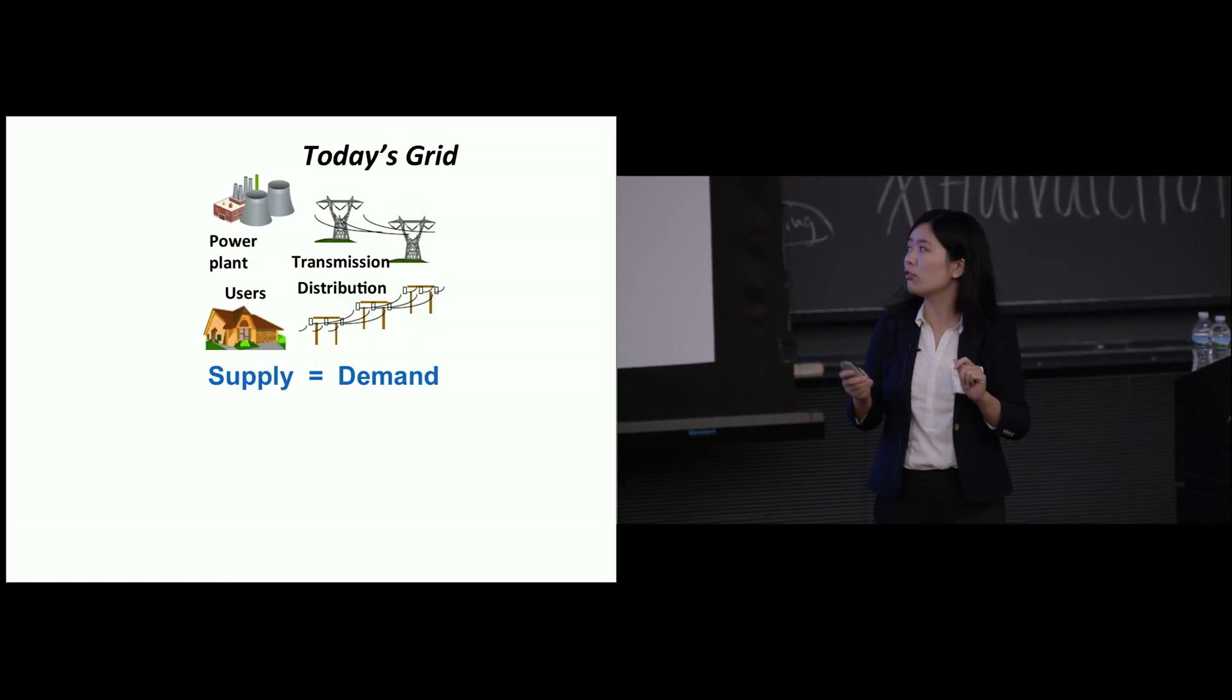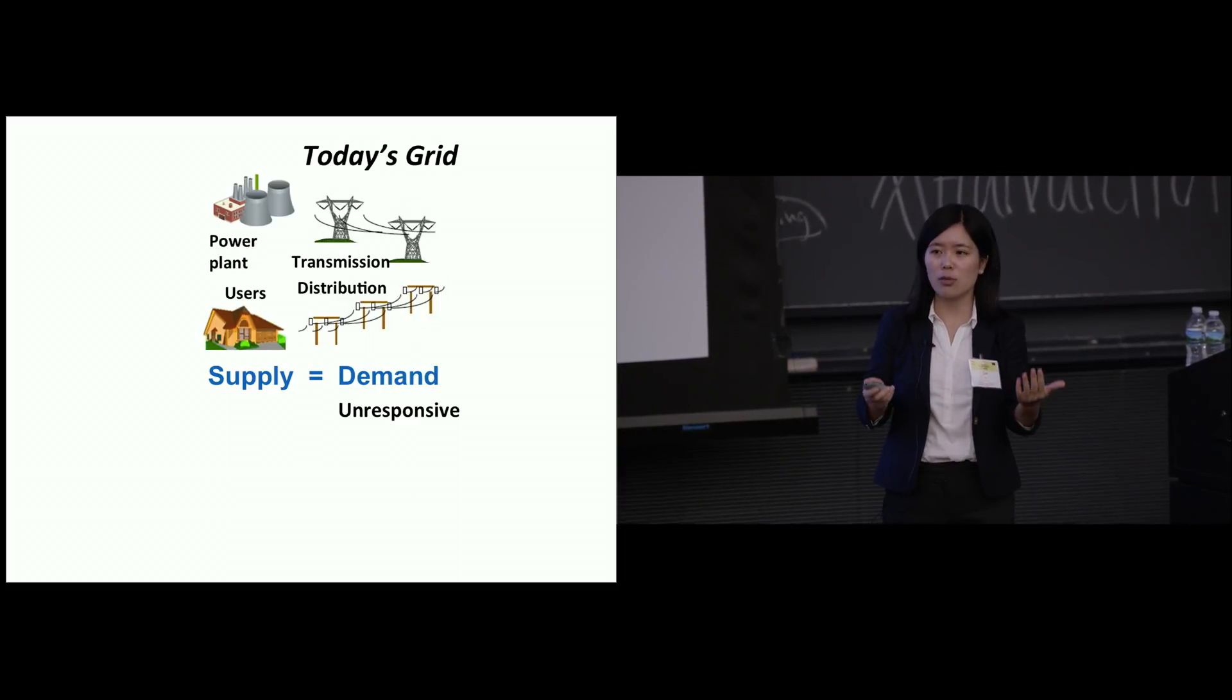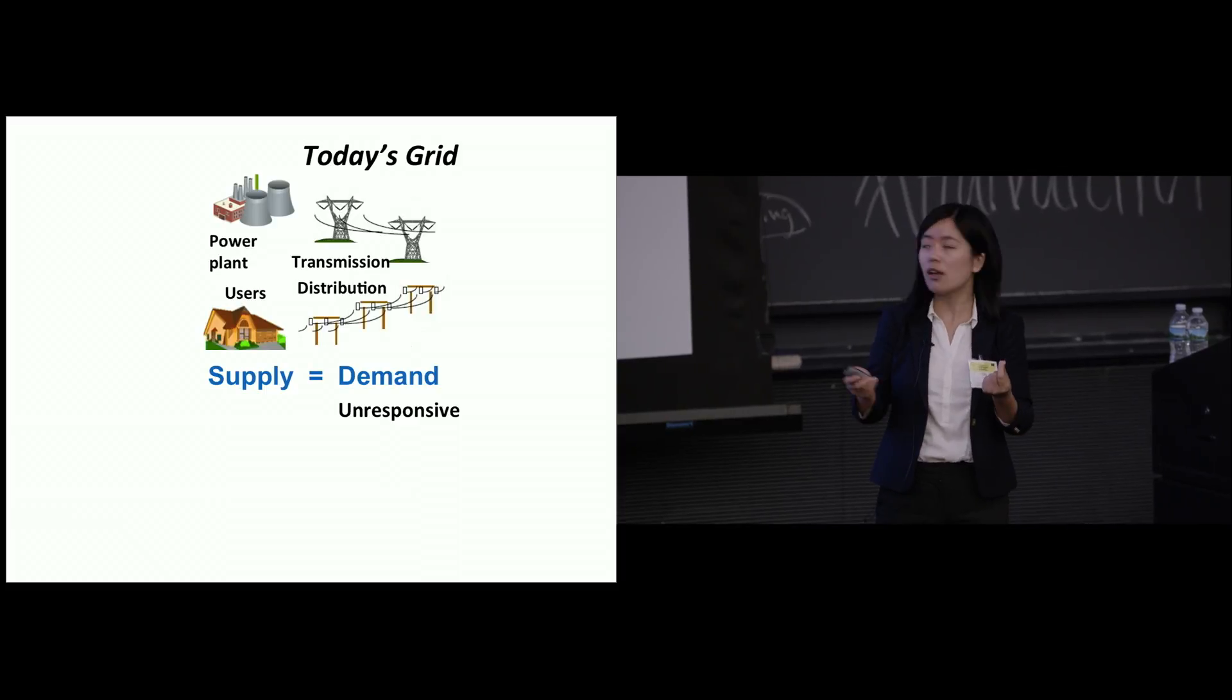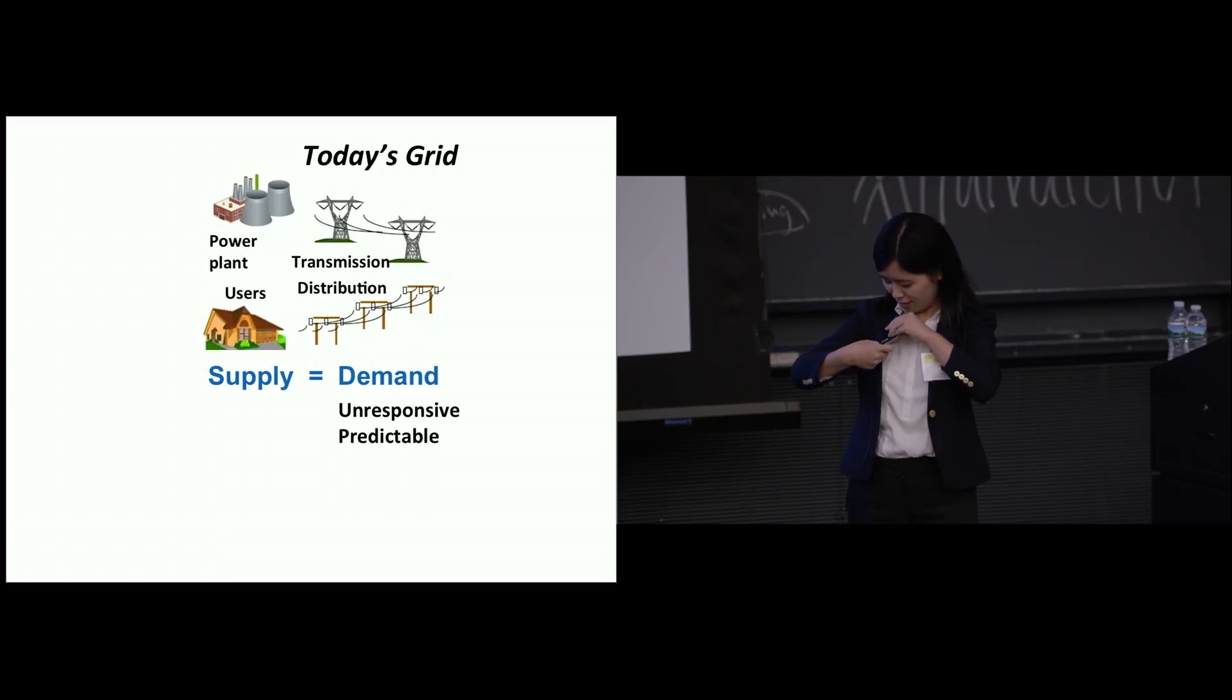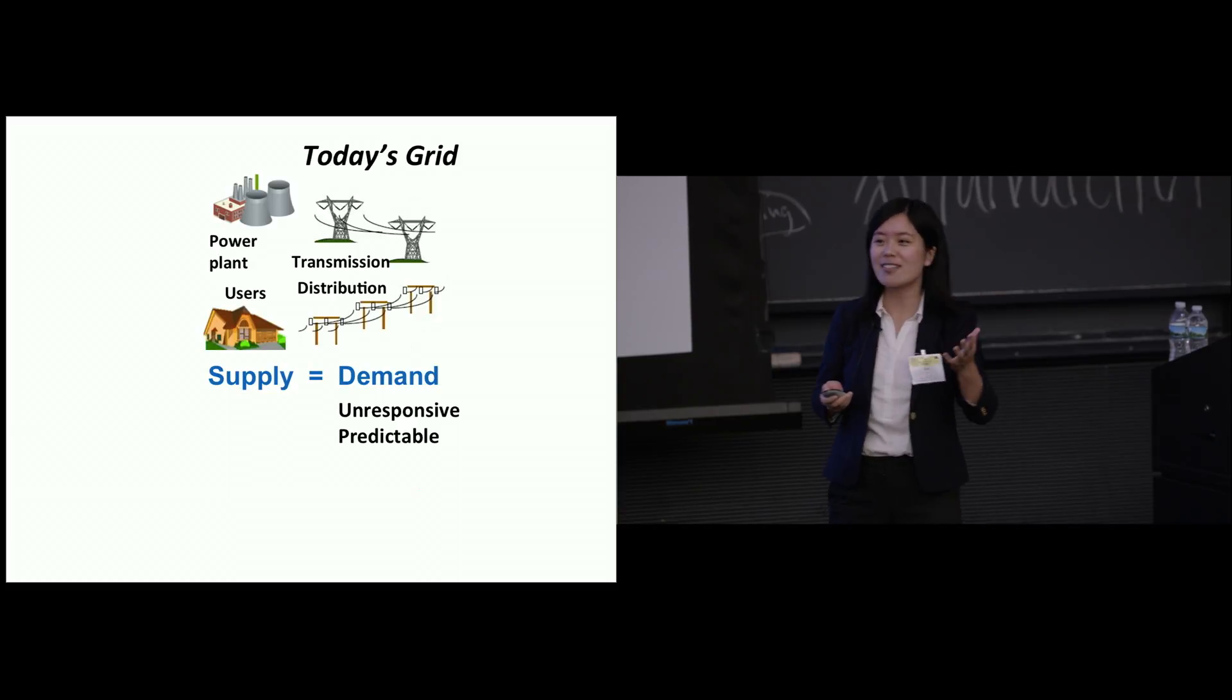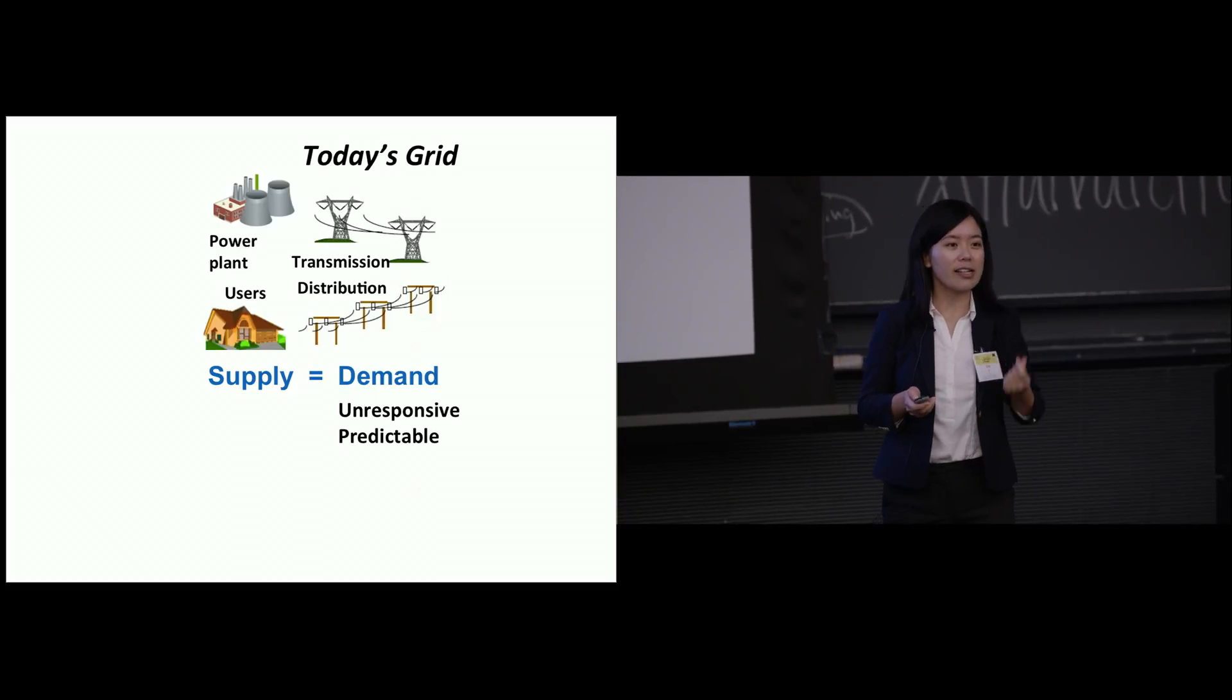The fundamental goal is to make sure supply equals demand all the time. Now we look at supply and demand. For the demand side we call it unresponsive. What this means is as a user we can decide how much to consume, what to consume, when to consume.